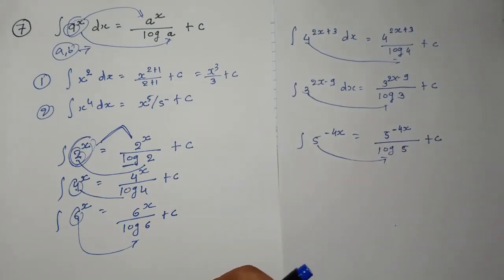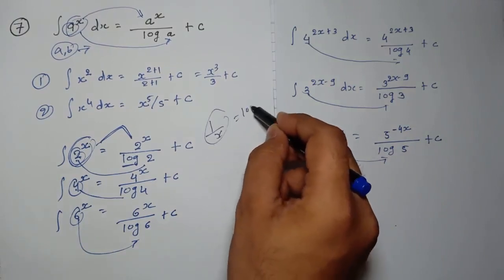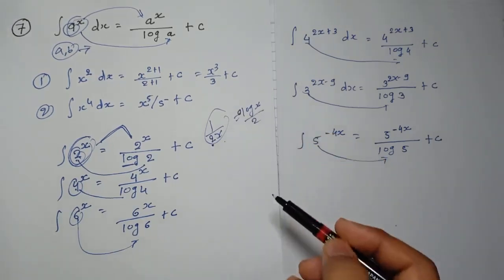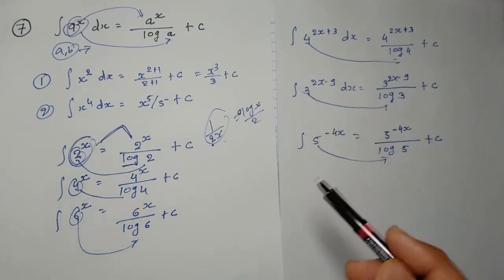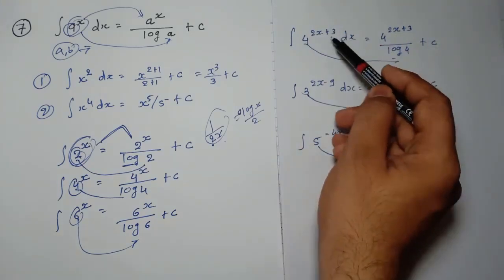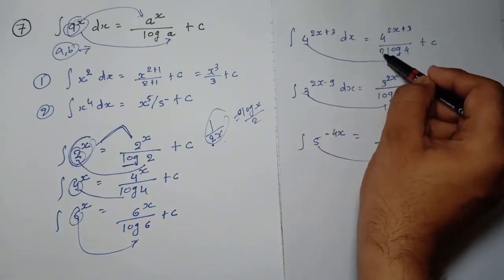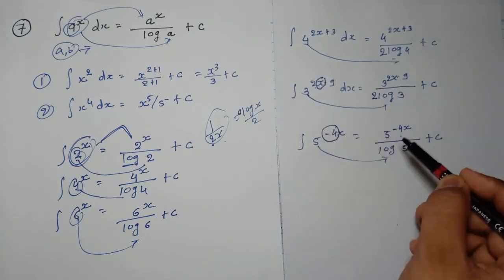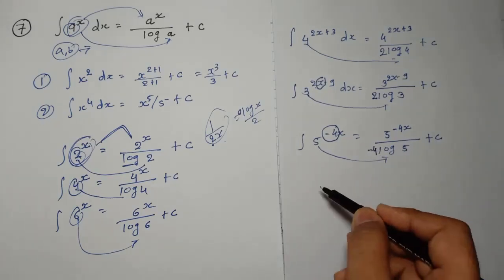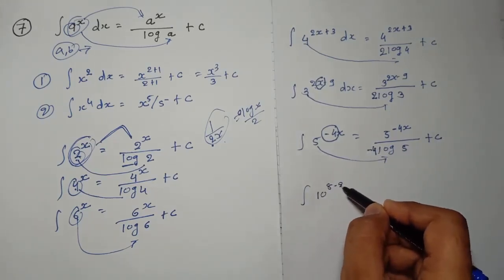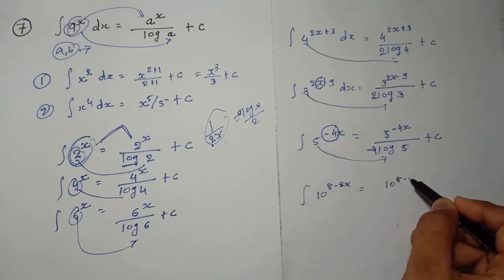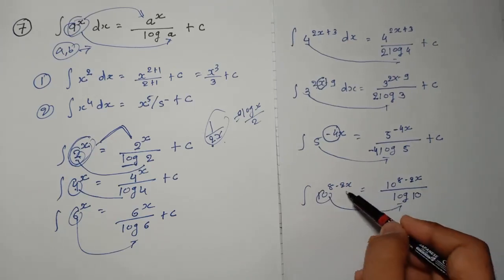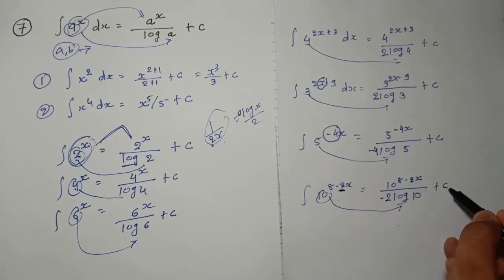Now one more thing I told in the previous video and also in this video: when we solve these, check if anything is multiplied by x. If yes, divide by that number. Here, minus 4 is multiplied by x so divide by minus 4. For 10 raised to 8 minus 2x: write 10 raised to 8 minus 2x as it is, divide by log 10, and since minus 2 is multiplied by x, divide by minus 2 plus c. For 5 raised to 4x plus 3: 5 raised to 4x plus 3 as it is, divide by log 5, and since 4 is multiplied by x, divide by 4. Clear — rule number 7 is completed.